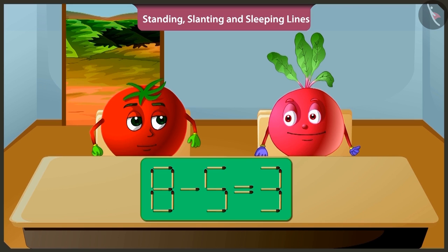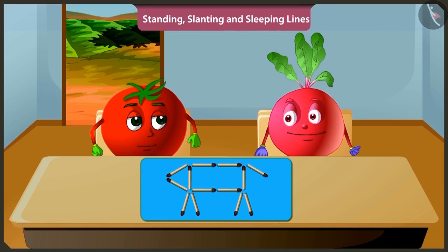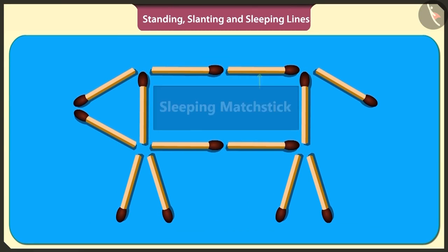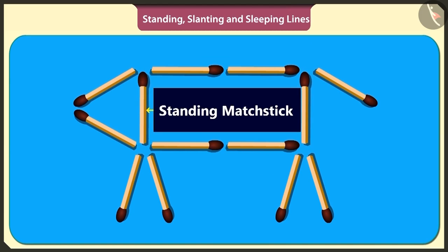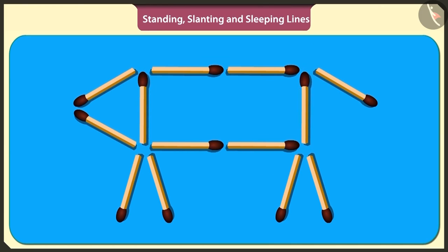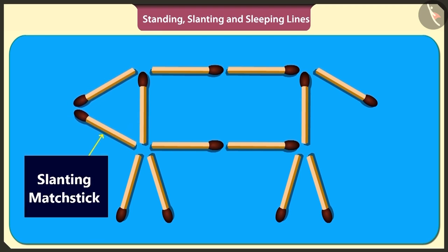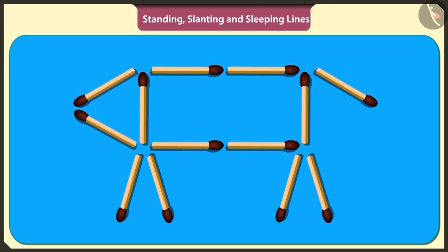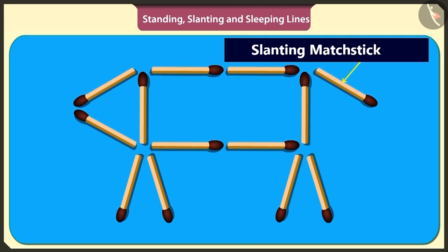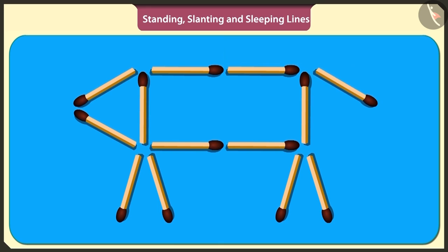This is fun. Let's play another game. I have made a dog using matchsticks. We made the dog's tummy using four sleeping sticks and two standing sticks. The dog's face is made using two slanting sticks. To make the dog's tail, one slanting stick has been used. Yes, and four standing sticks have made the four legs of the dog.